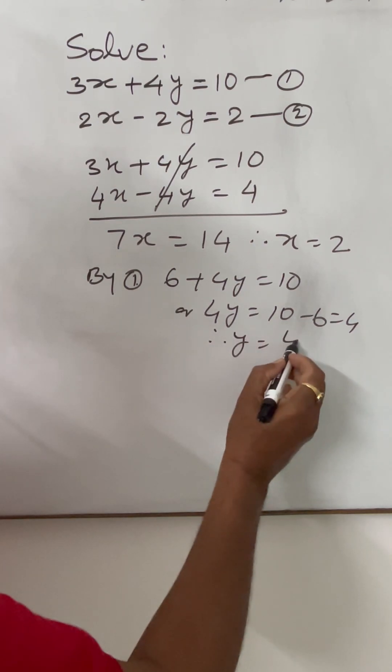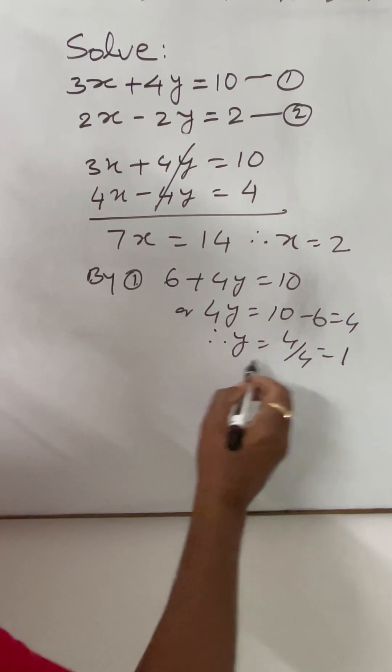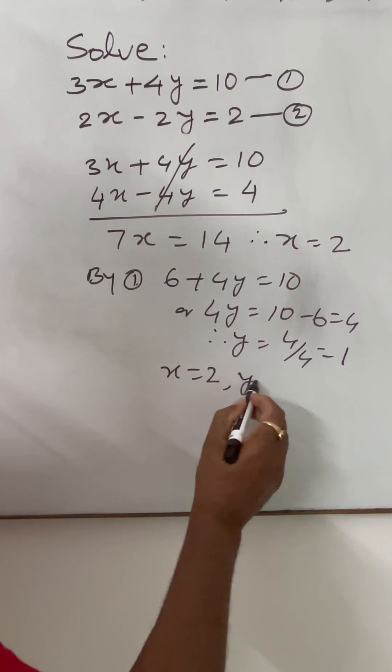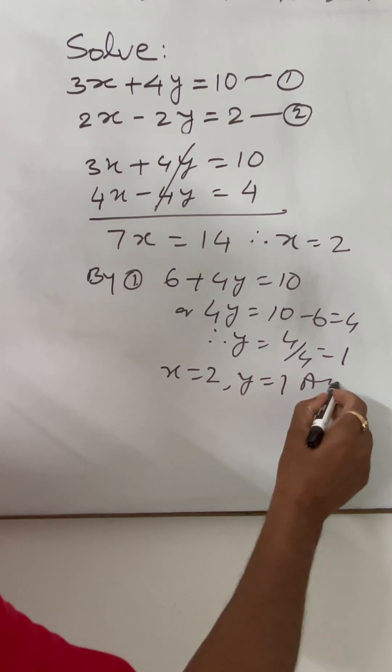So therefore, y is equal to 4 by 4, this is equal to 1. So we are getting x is equal to 2 and y is equal to 1, this is the answer.